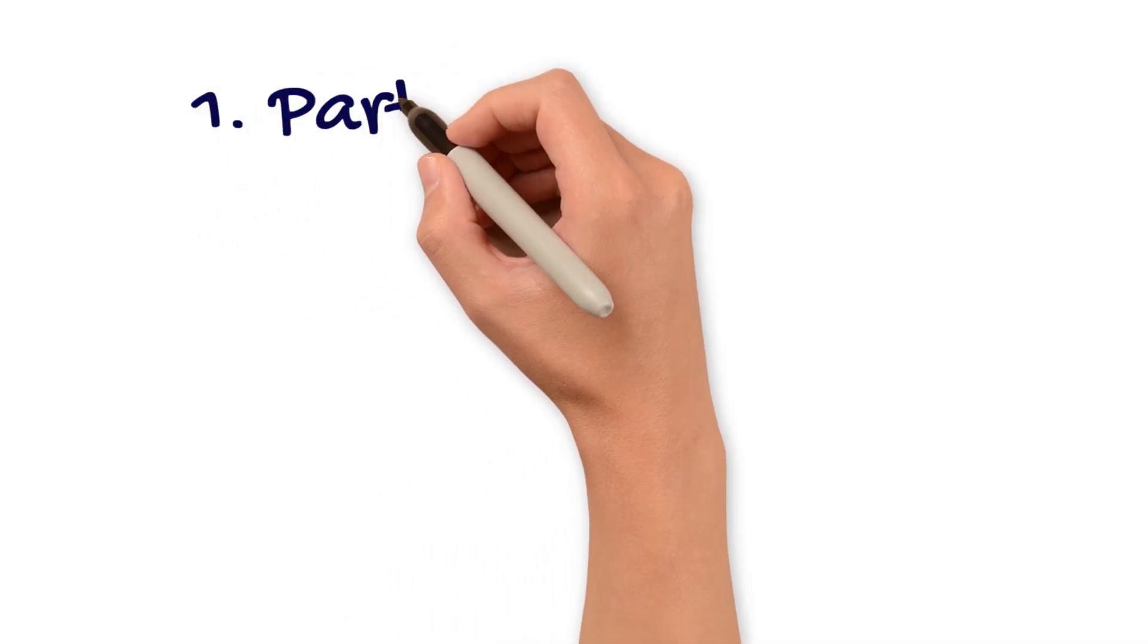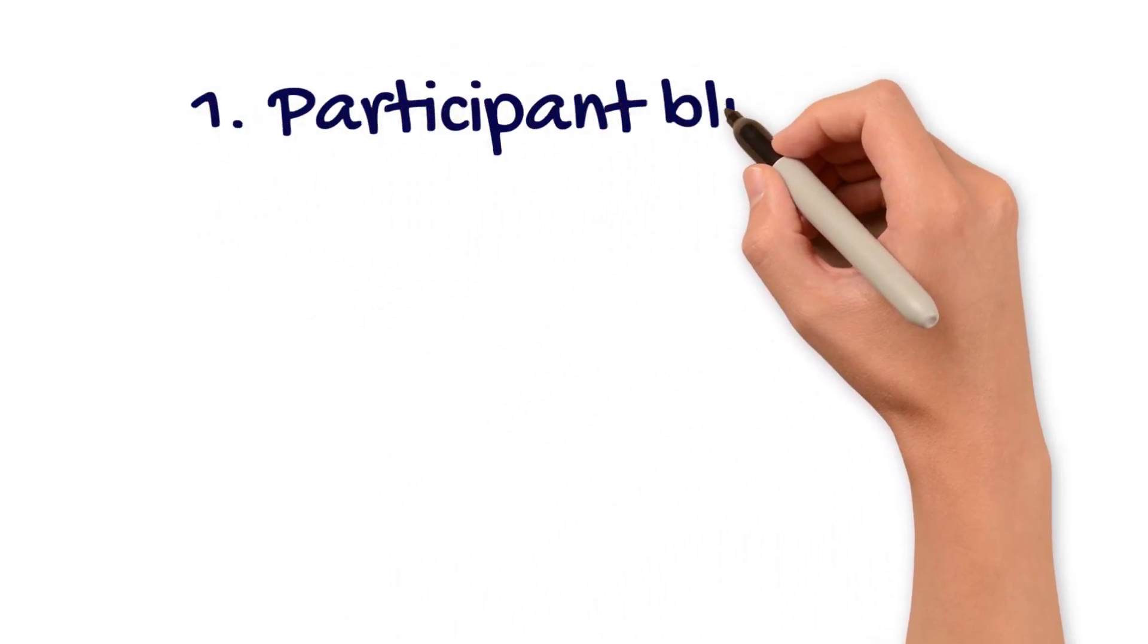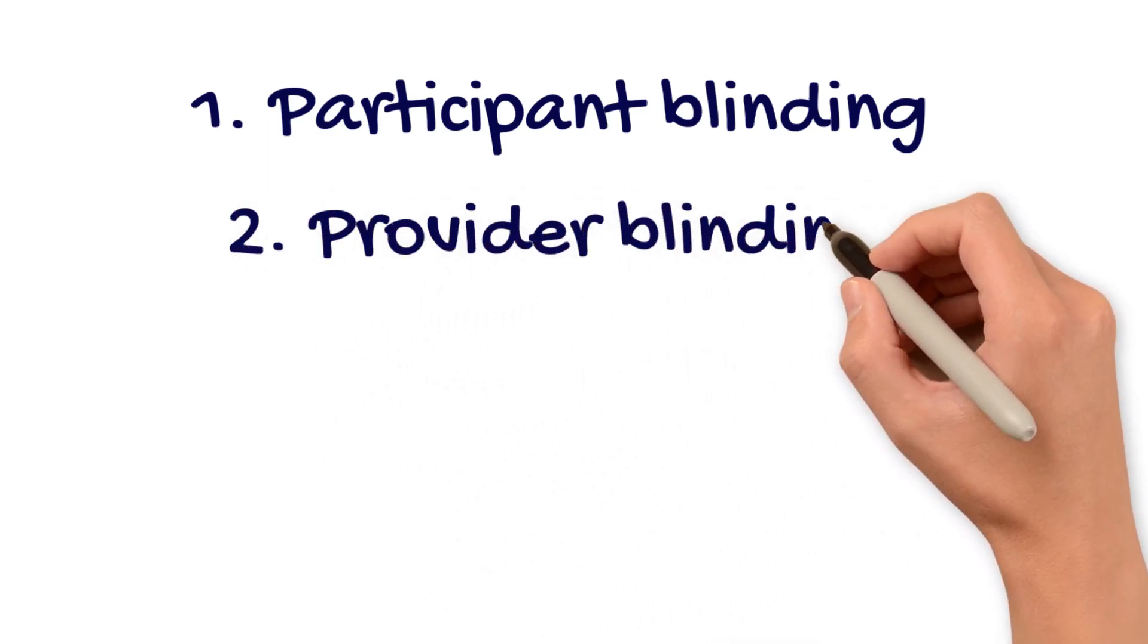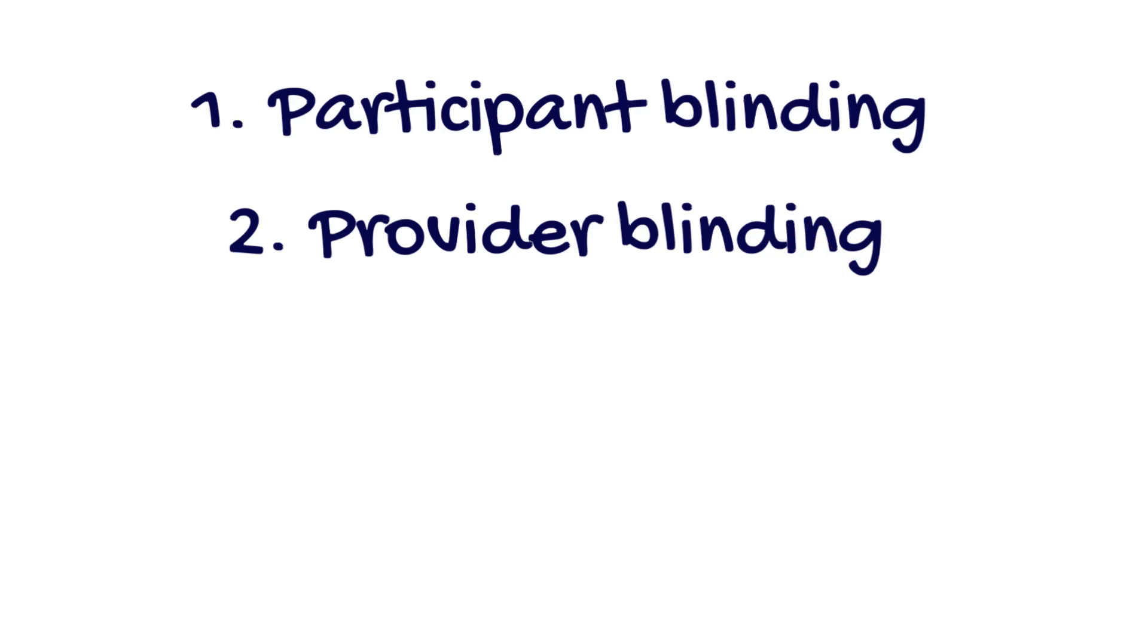Participant blinding means that the treatment and comparison interventions are indistinguishable for the participants and they do not know which one they are receiving. Provider blinding means that the treatment and the comparison intervention are indistinguishable for those providing the treatment to the participants.